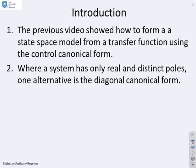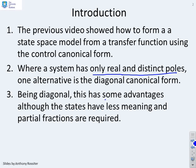Where a system has only real and distinct poles, one alternative is the diagonal canonical form. Being diagonal, this has some advantages in terms of computational advantages and insight, but you should note the states have less physical meaning. They may not correspond directly to a displacement, velocity, or temperature. They may relate to nothing physical.